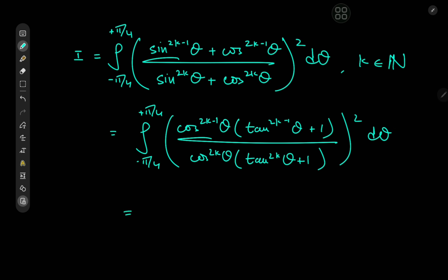In fact, the only cosine function we're left with is the multiplicative inverse of the cosine function up top in the numerator, that is the secant function. So we have integral from -π/4 to π/4 of sec^2θ (1 + tan^(2k-1)θ) / (1 + tan^(2k)θ)^2 dθ.